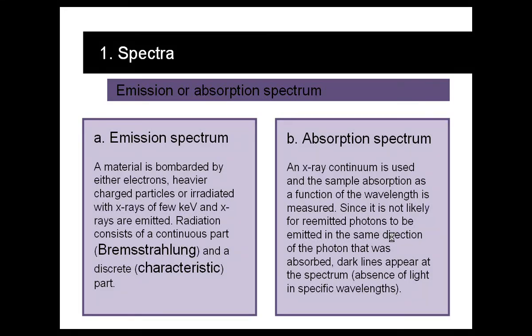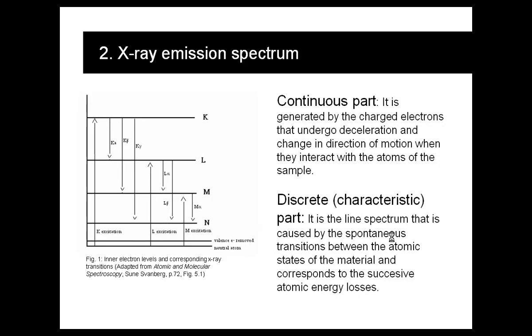The absorption spectrum is when we irradiate the material again, but then we detect the part of the radiation that was lost due to absorption, and that is the dark lines that we see in the spectrum.